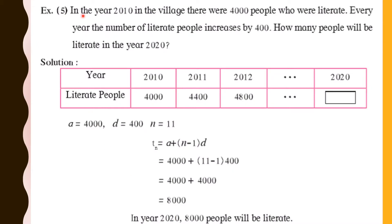Read the problem carefully. In the year 2010, in a village, there were 4000 people who were literate. Every year, the number of literate people increased by 400. How many people will be literate in the year 2020?